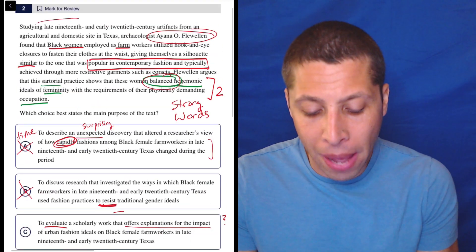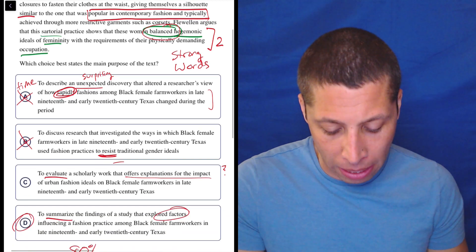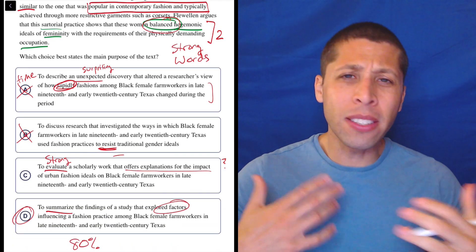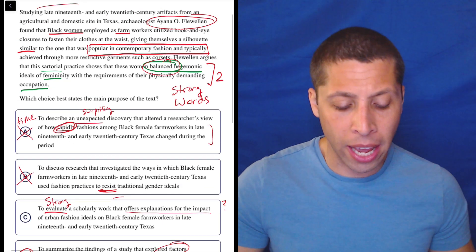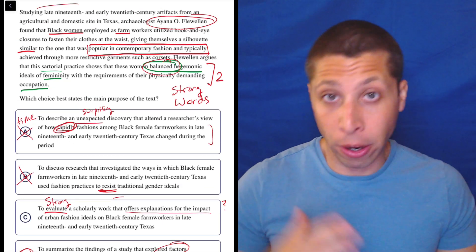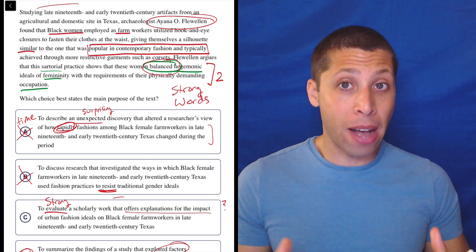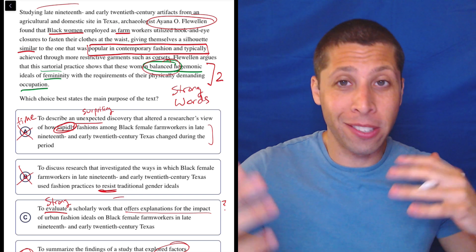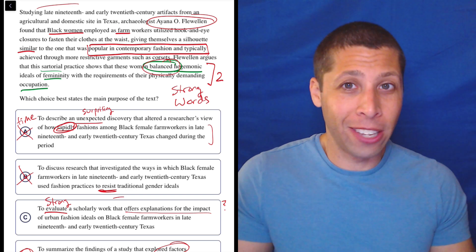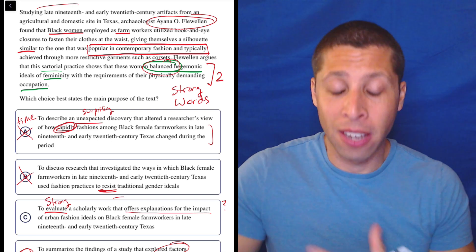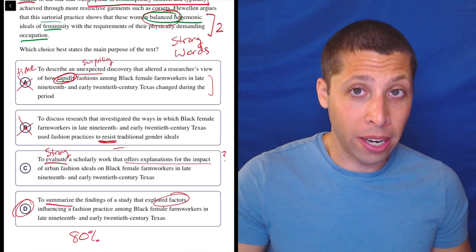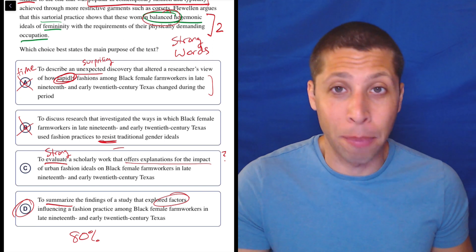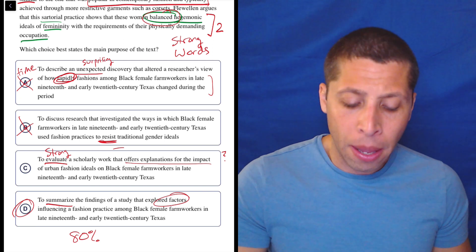But I feel like evaluate is very strong. It doesn't seem like the purpose of this text is to say whether Ayanna Flewellen is right or wrong. It seems to be about just saying, here's what Ayanna found about these farm workers. It's not saying good, bad, just saying facts. So to me, that is a summary. That is not an evaluation. Evaluation seems like I would need to say a positive or negative connotation. I will say though, so D is the right answer by the way,